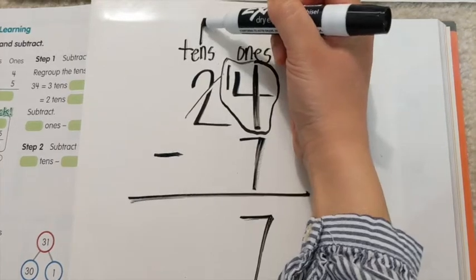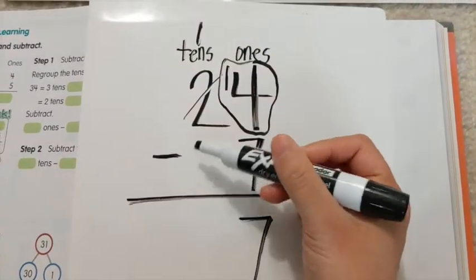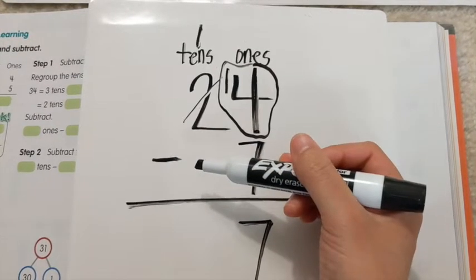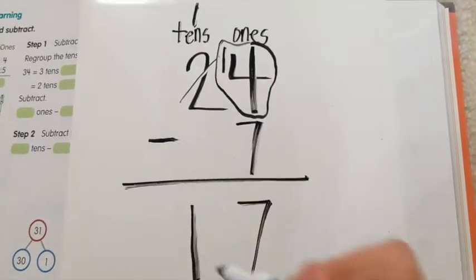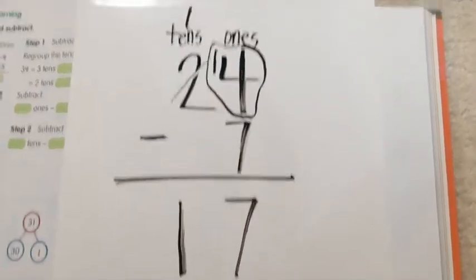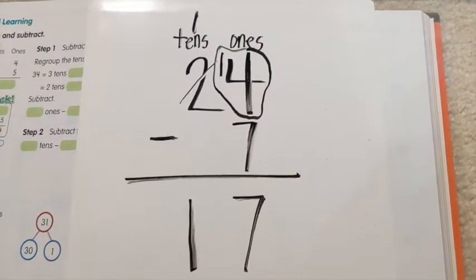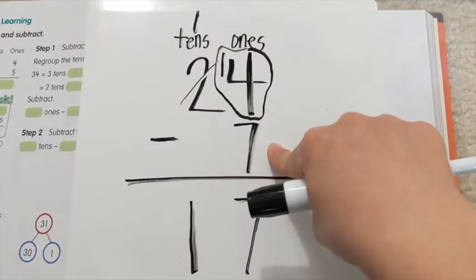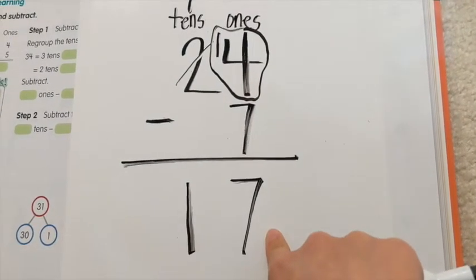Now do the tens place. We have one ten here and no tens that we're going to take away, so we still have one ten left over. We have to connect this to a real situation: if we had twenty-four kids in our class and seven went home early, we would have less kids in the class — we would have seventeen kids.